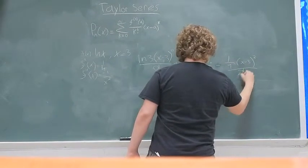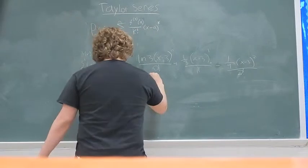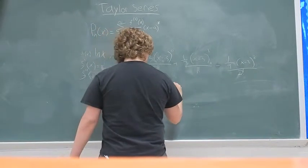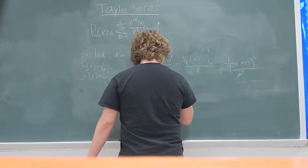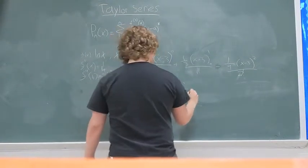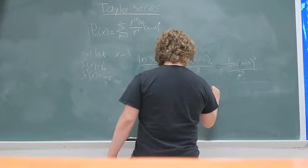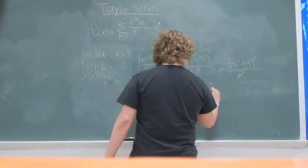So this simplifies back to be ln of 3 plus x minus 3 over 3 minus x minus 3 squared over...